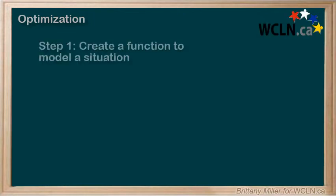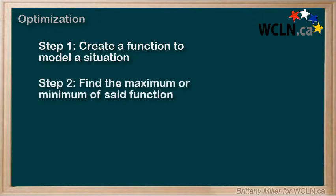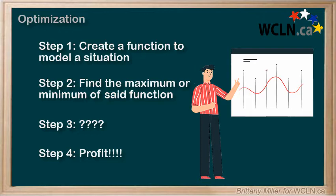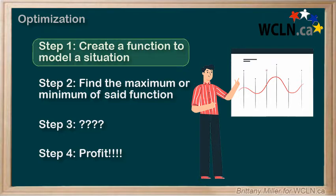Optimization deals with creating a mathematical function to model a real-life situation, and then finding the maximum or the minimum of that function. You can imagine that a lot of companies would be looking to maximize their profit, so this is a type of math that happens often in the real world. You already know how to find the maximum or minimum of a quadratic function, so that part is going to be pretty easy. The tricky thing will be interpreting the context in order to figure out what the function actually is. Let's jump right into an example.